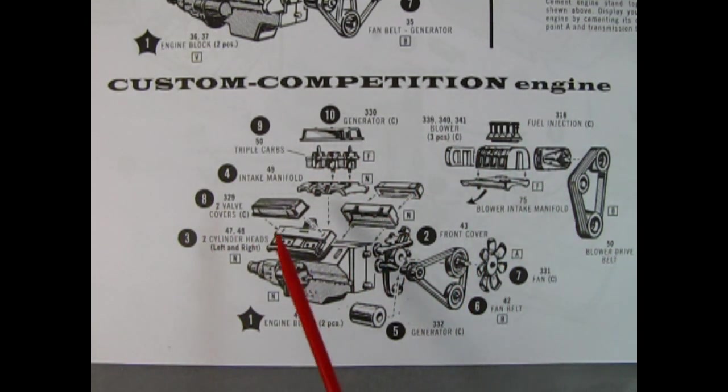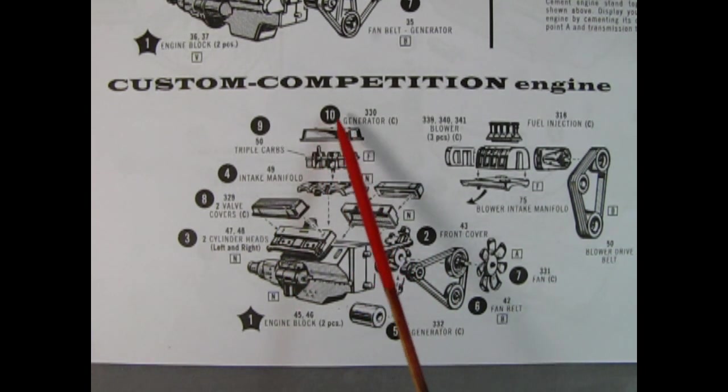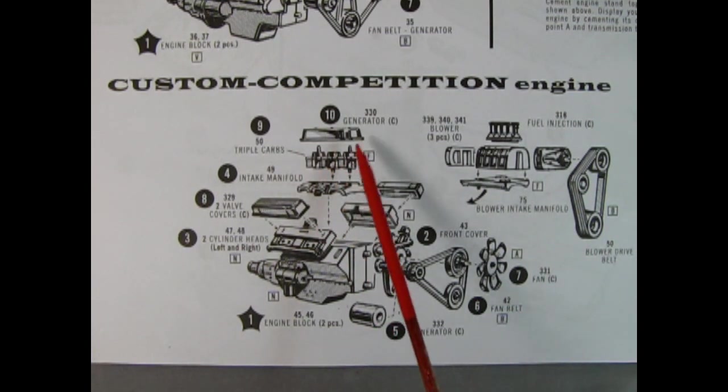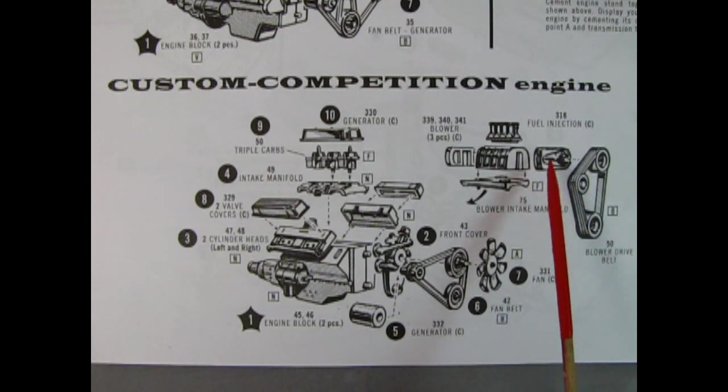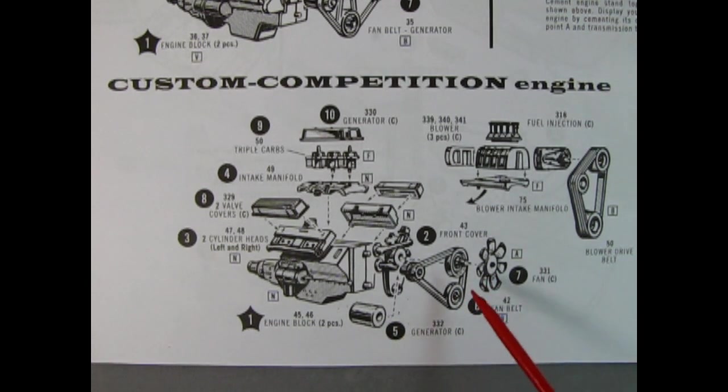The custom and competition engine goes together in the same way that the stock engine went together by first gluing the engine block halves together. But here you glue your front cover on, followed by your cylinder heads. Then the intake manifold drops down. You add your generator to the front fan belts as well as the six-bladed fan. Glue these three pieces together as one assembly, then attach them into that front cover. After that, you want to glue on your chrome valve covers, add your triple carbs, add that air cleaner on the top and sandwich this all together. Then you'll have your custom engine. If you decide to build the competition engine, then replace the custom intake manifold, triple carbs and the air cleaner with the blower intake manifold, the blower front cover, the center of the blower and the blower rear cover. Glue this together as a one piece. Add on your fuel injector on the top and then replace your fan belt, fan and generator with the blower belt drive.